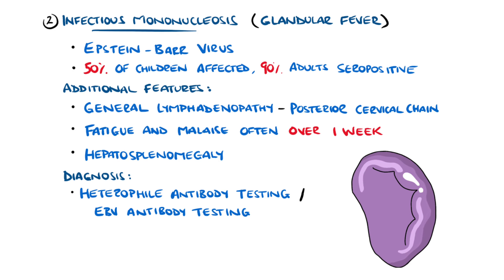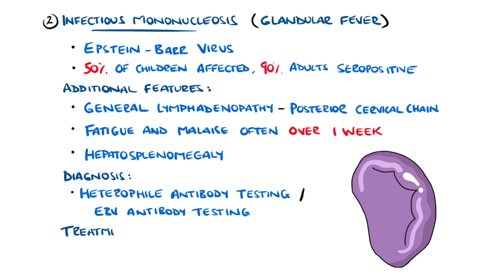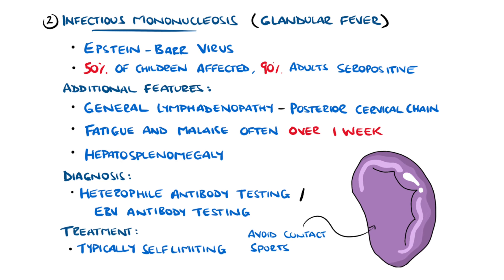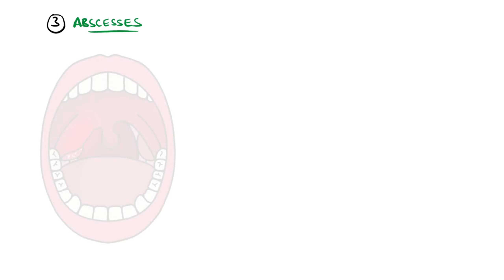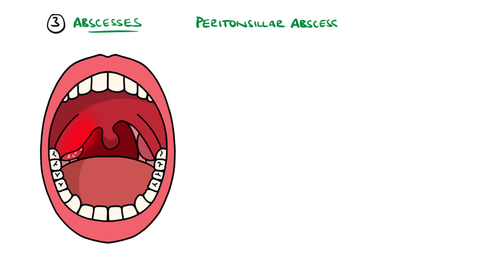This is tested by heterophile antibody testing called a monospot, or specific Epstein-Barr virus antibody testing. Due to the presentation being similar to that of primary HIV, those with HIV risk factors should be tested for HIV. Treatment is typically supportive as the disease is mostly self-limiting, with advice to avoid contact sports for approximately three to four weeks due to the risk of splenic rupture.